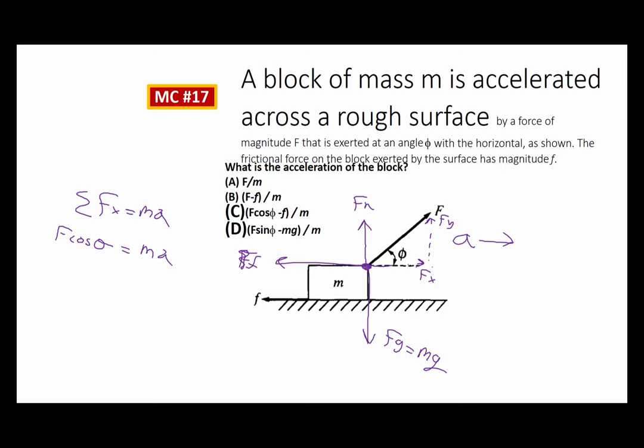I forgot one thing — that's only my helping force. I also have a hindering force. So my net force is F cosine theta minus the force of friction, all equal to m times a. Solving for acceleration, I divide both sides by m and get option C. All the vertical stuff didn't even matter here — it was all asking about horizontal acceleration. I had the normal force and gravity info, but in this case I didn't even need it.